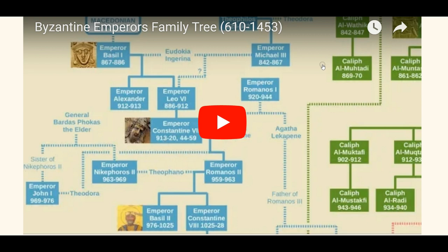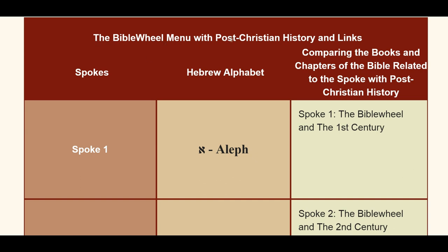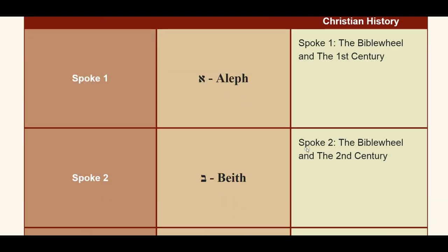It's not just the Byzantines — what I do is look into the era and century they lived in, and how it coincides with the number of the book in the Bible. Here's the Bible Wheel menu with post-Christian history and links. On the left hand there are the 22 spokes, the middle section has the 22 alphabets represented by those spokes, and on the right hand the 22 centuries.